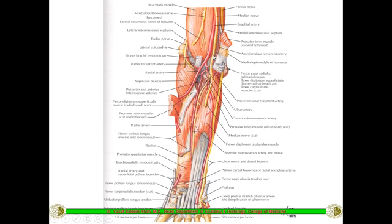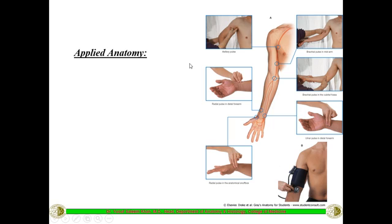All the boundaries have been reflected so you can see the contents. From medial to lateral: the median nerve, then the brachial artery with its two terminal branches — radial and ulnar — then the biceps brachii tendon, and on the lateral side the radial nerve. These are the four important contents of the cubital fossa.